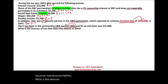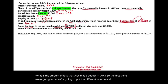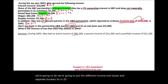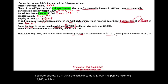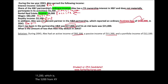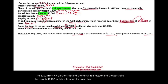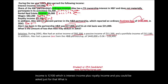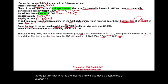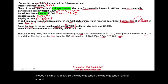What is the amount of loss that Alex may deduct in 20X3? The first thing we do is put the different income and losses in separate buckets. Active income is $82,000. Passive income is $11,200, which is the $5,200 from XY partnership plus the rental real estate. Portfolio income is $12,100, which is interest income plus royalty income.